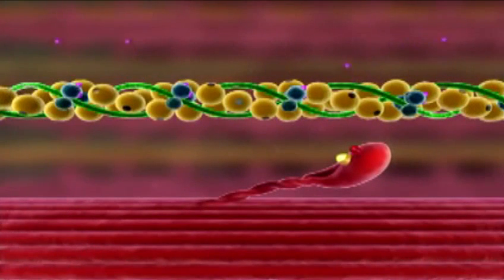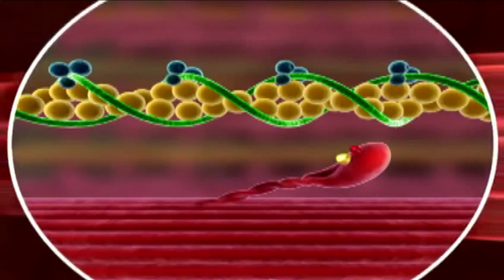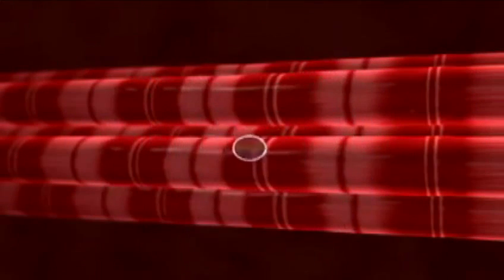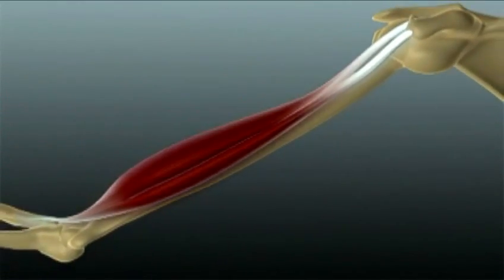Crossbridge cycling ends when calcium ions are actively transported back into the sarcoplasmic reticulum. Troponin returns to its original shape, allowing tropomyosin to glide over and cover the myosin binding site on actin.